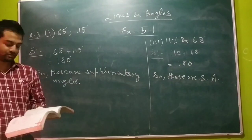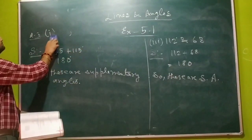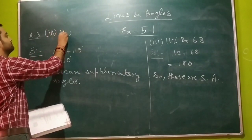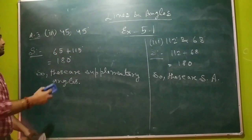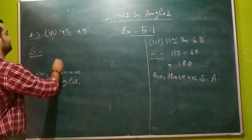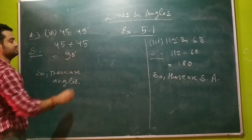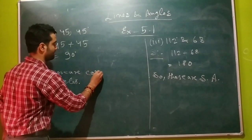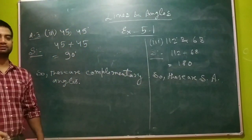Our fifth question gives us two measurements: 45 degrees each. We have to find out whether these are complementary or supplementary angles. When we add these two angles, we get the answer 90 degrees. Since 90 degrees is the sum of complementary angles, so these are complementary angles.